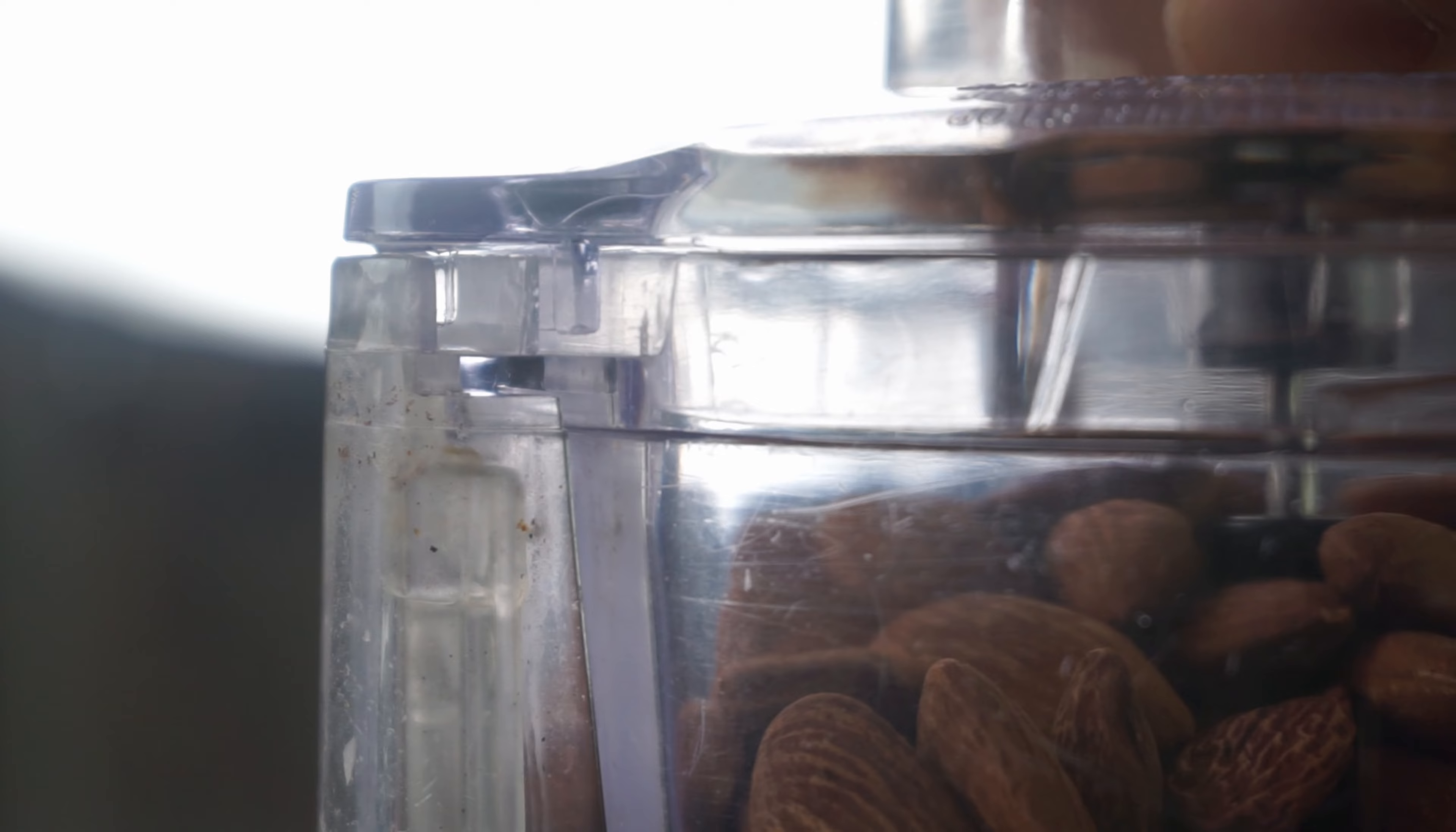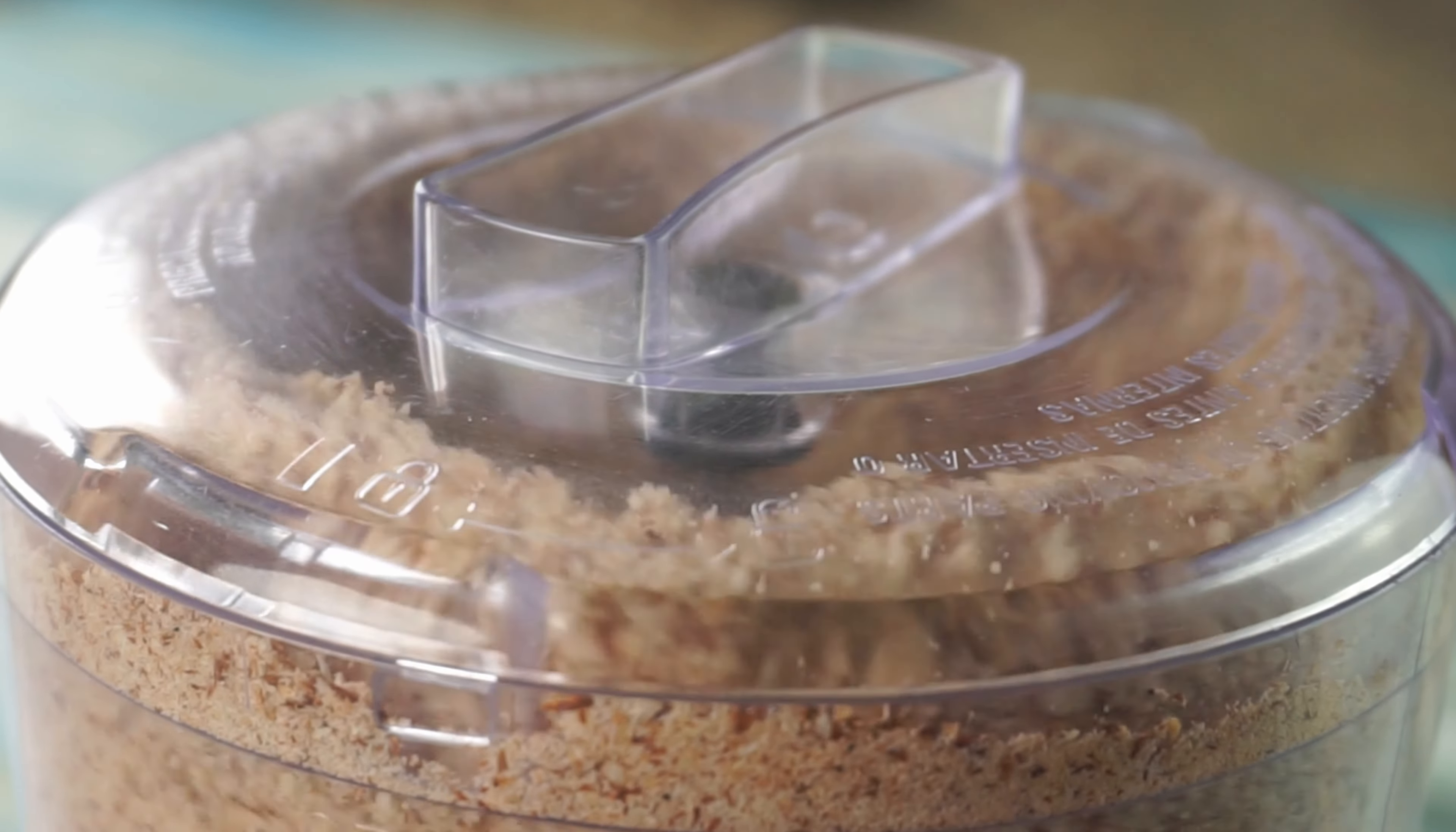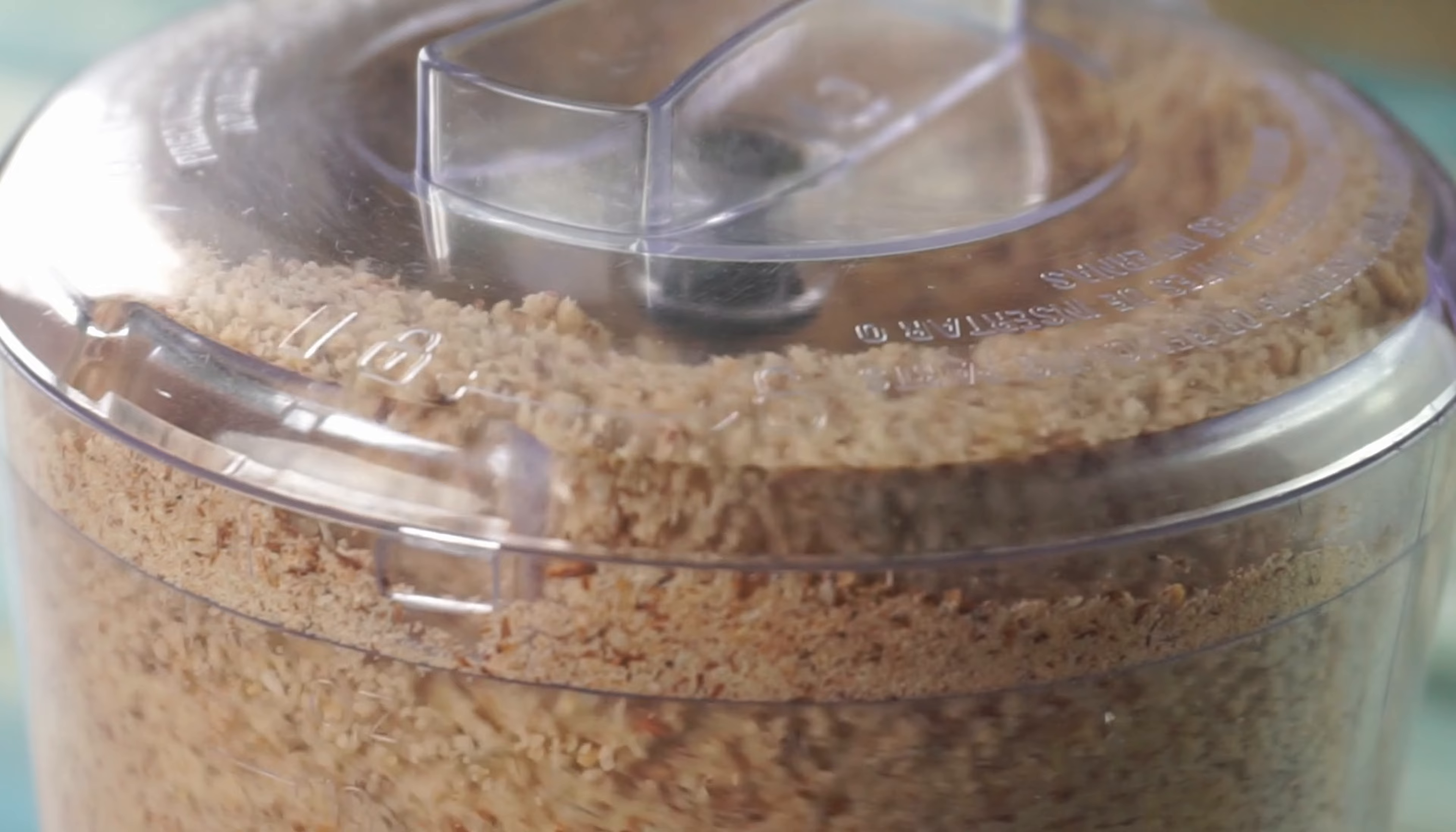The almonds will go from flour-like clumps to a ball against the side of the food processor. Keep scraping down the sides and breaking up the ball.